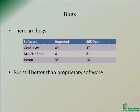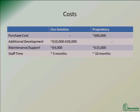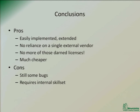With open source, we can pay someone to fix the bug and it gets fixed. Costs: as mentioned, it's a lot cheaper — there's no purchase cost. We decided to put some extra money into development, which is where the 10 to 30 thousand comes from. Maintenance is cheaper and it took a lot less staff time, so the total cost was cheaper. Conclusions: there are lots of pros — it's easily implemented and extended, and we're not reliant on a single vendor. Previously we had something not working for two years where our vendor couldn't do anything.